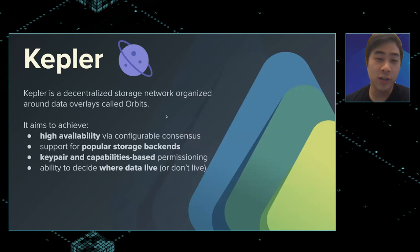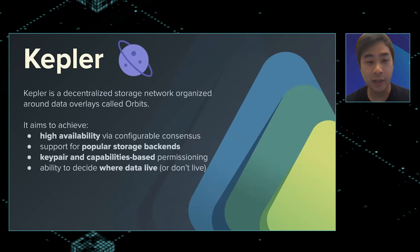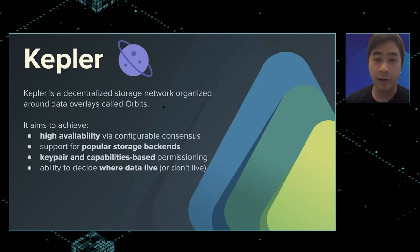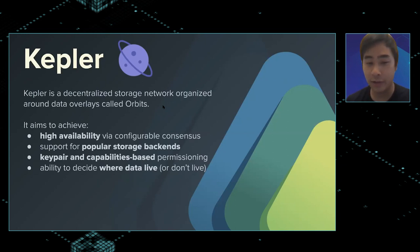Kepler is a decentralized storage network organized around data overlays called Orbits, and it's built using IPFS. It supports many different kinds of storage backends, and the goals are to provide permissioning. For example, how do you delete stuff from IPFS today? We want to figure out a canonical way to control that for people who need to delete things to comply with GDPR or the CCPA here in the States.